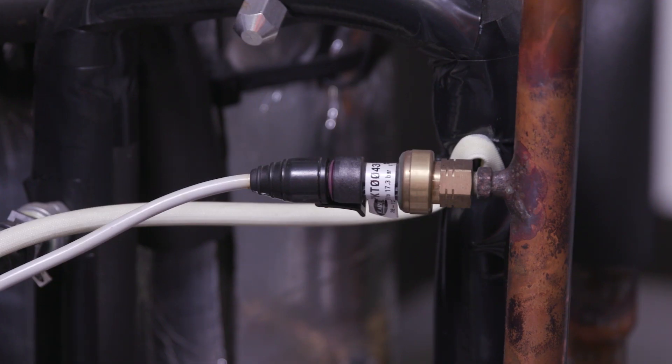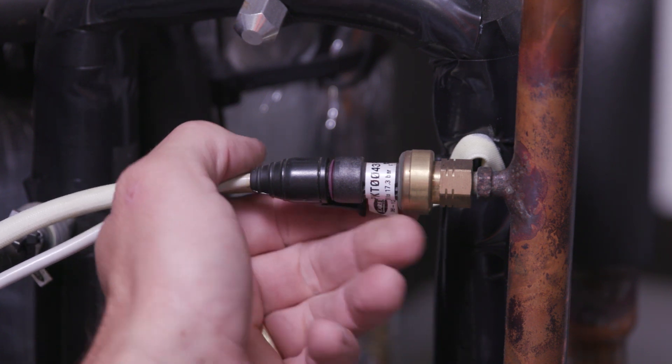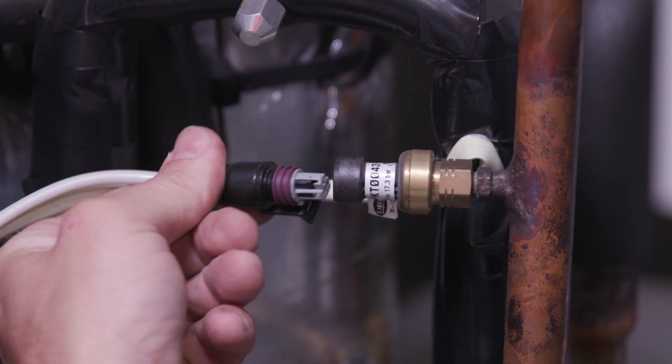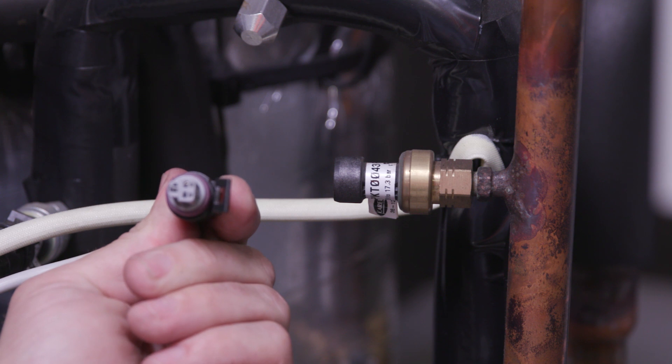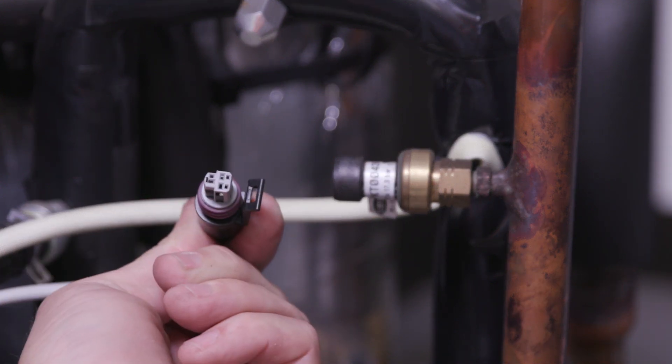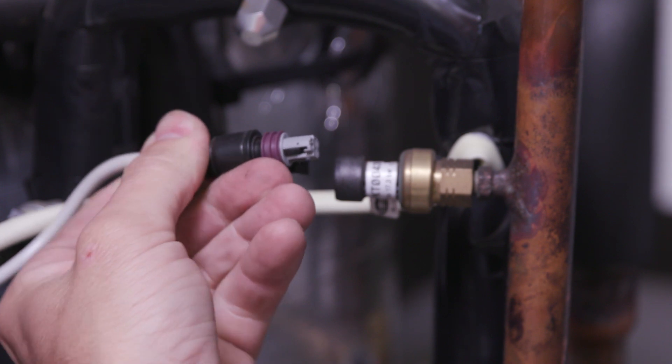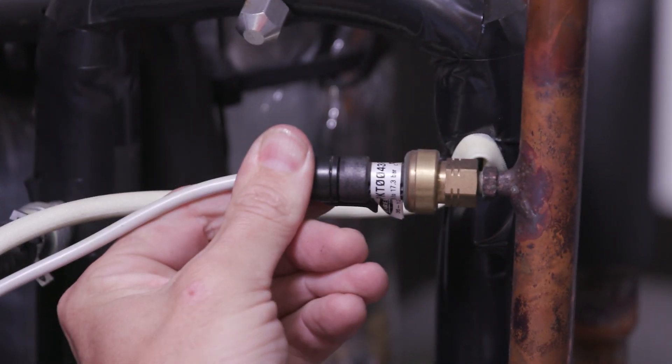When troubleshooting a faulty transducer, first check the transducer terminals by unplugging the transducer lead. Oil and dust residue can affect the transducer voltage output. Use contact cleaner to ensure electrical contacts are clean.